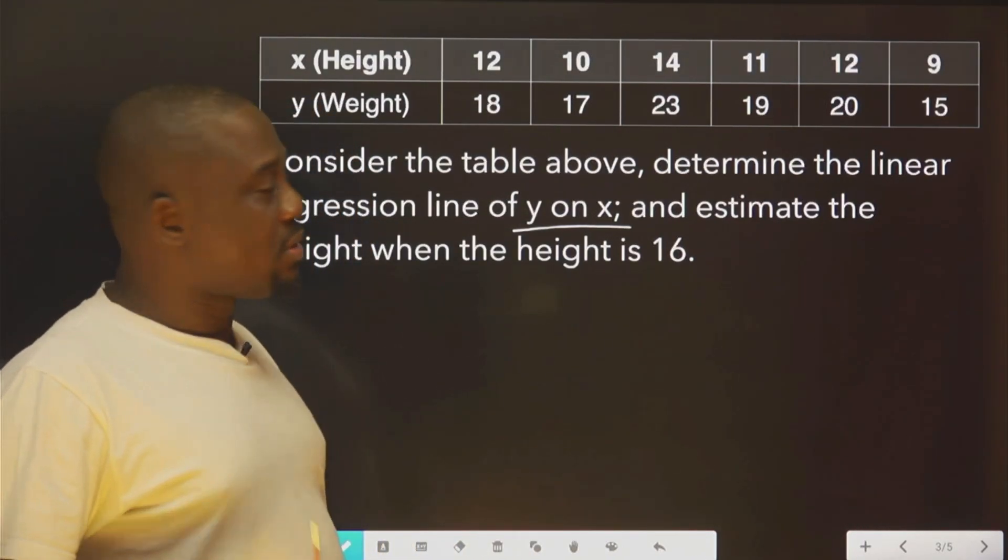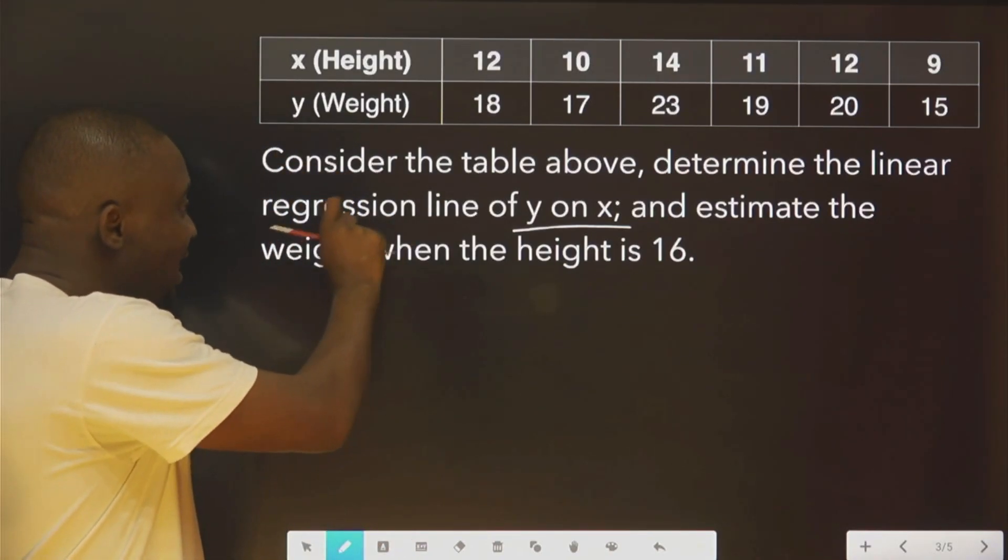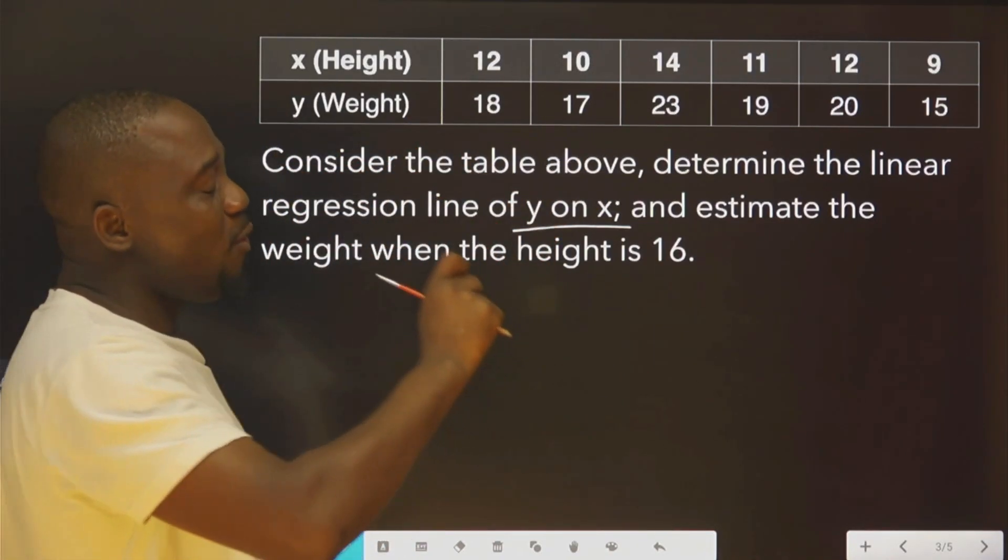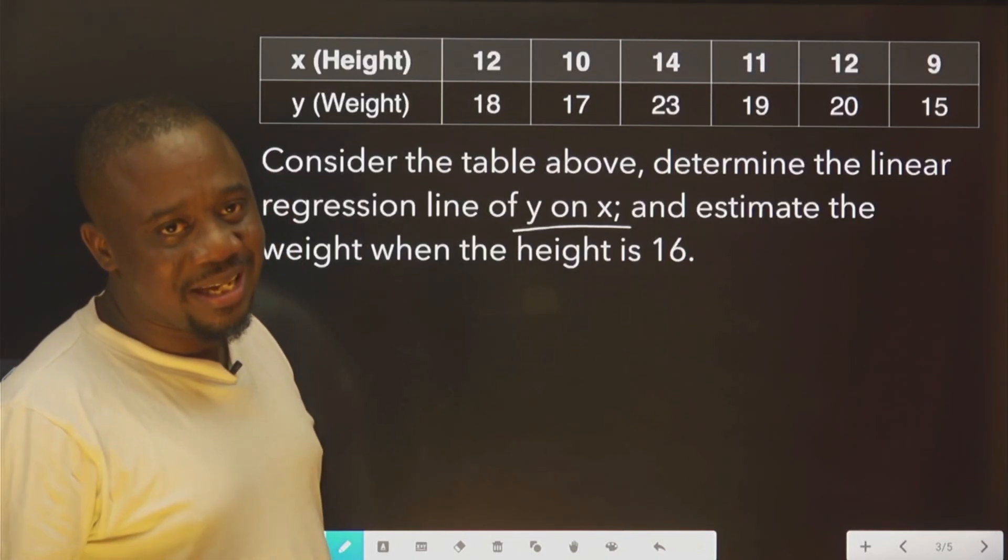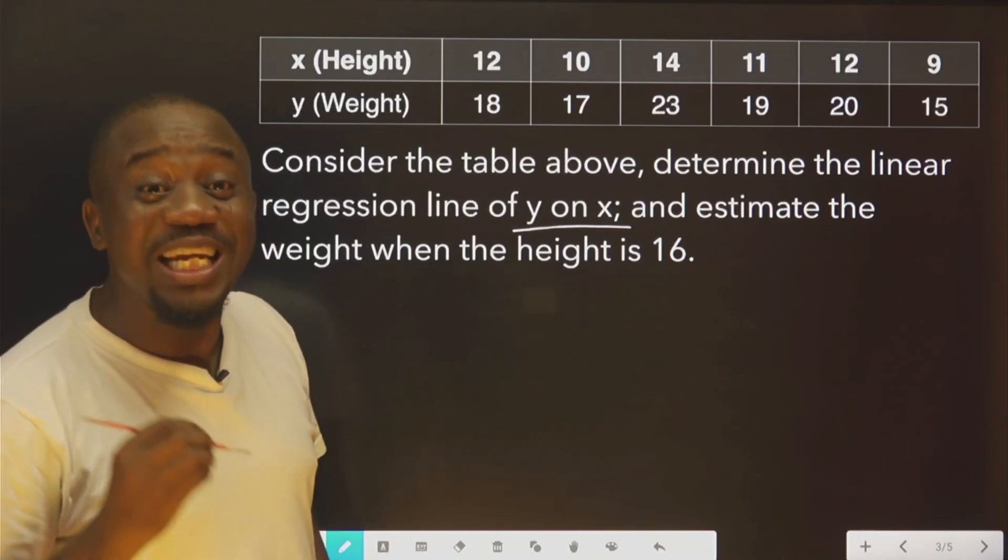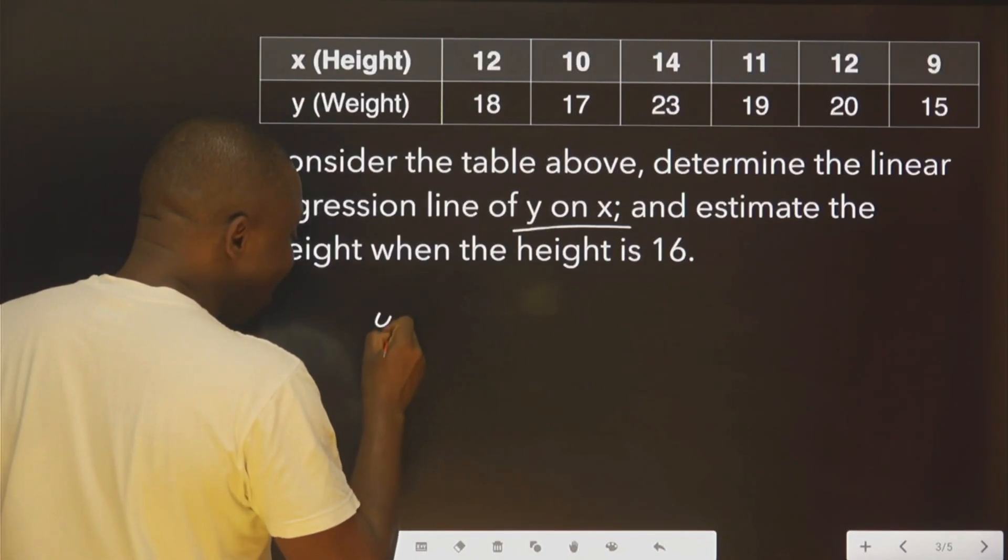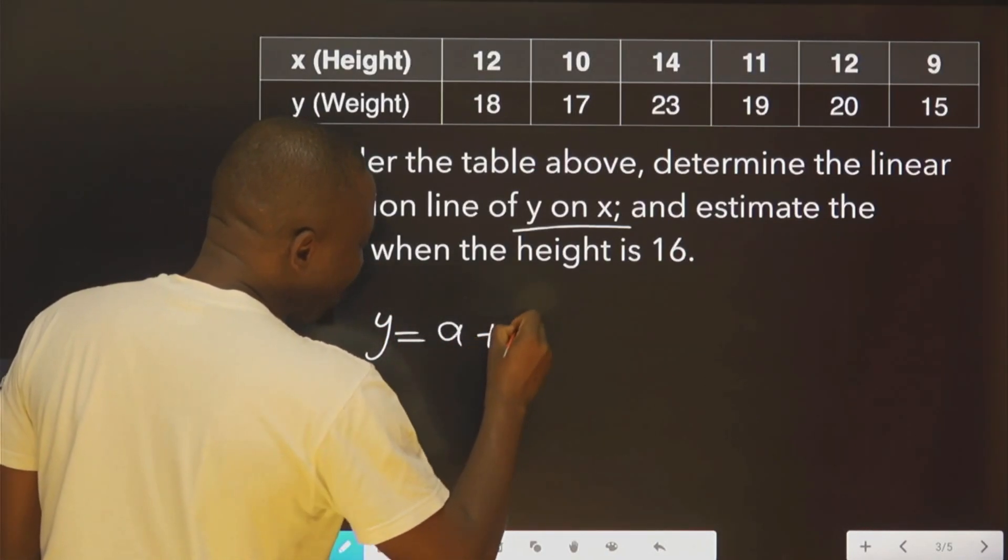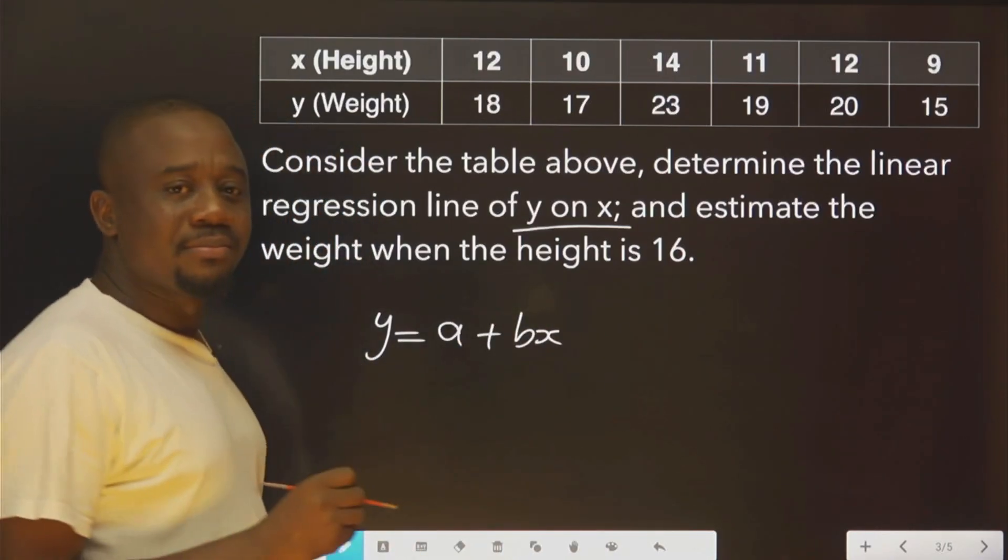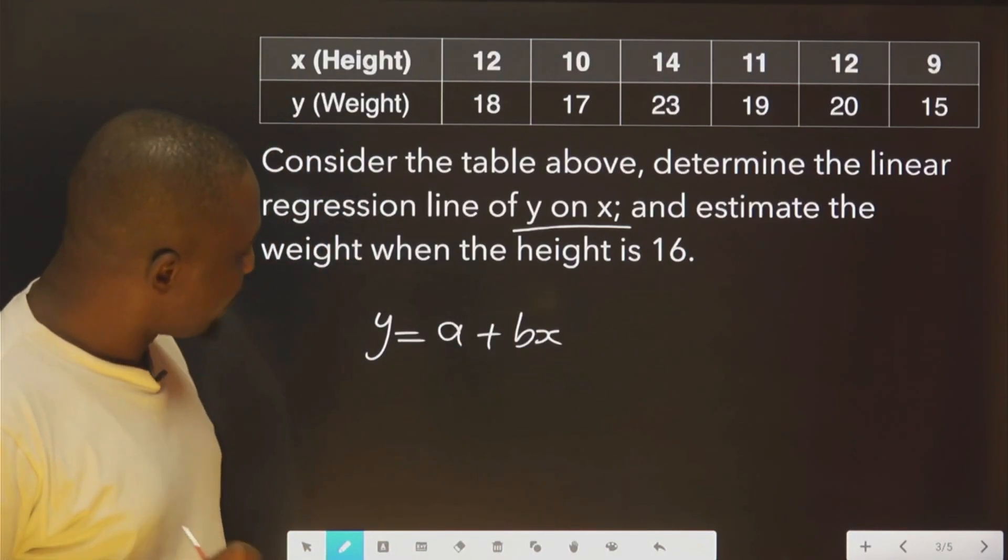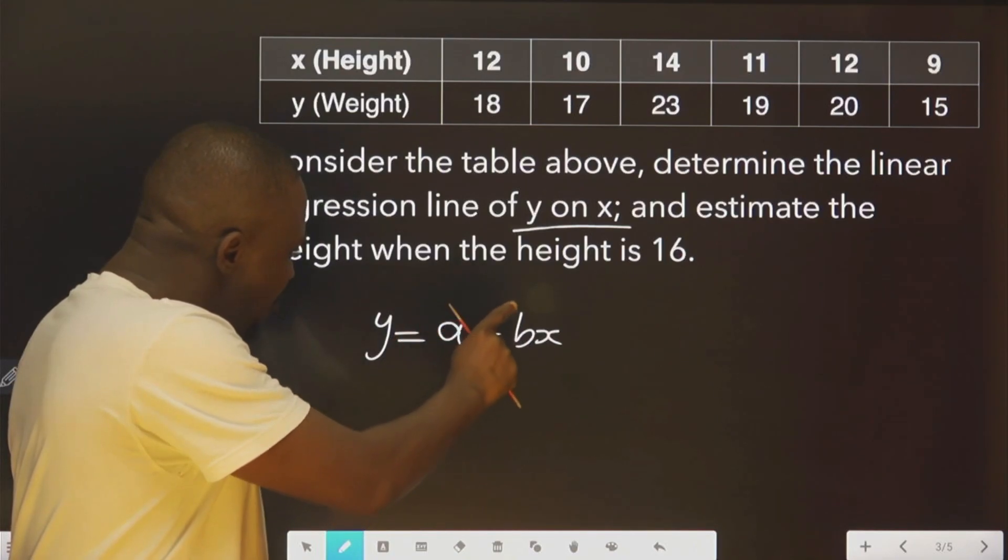Two in one question. The first is linear regression line of y on x. What is the formula for linear regression? It says y equals a plus bx. So what you need to do now, you find a, you find b.